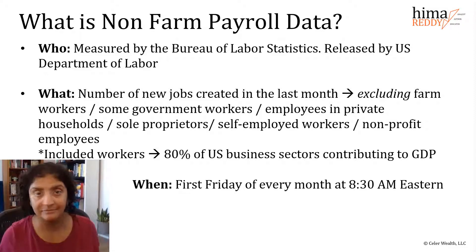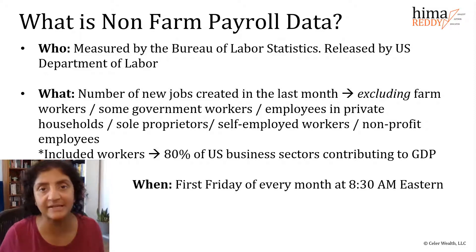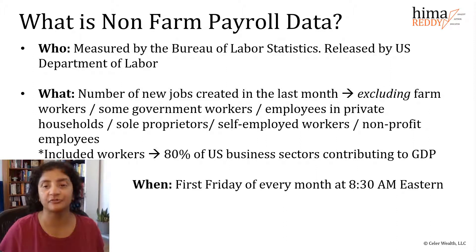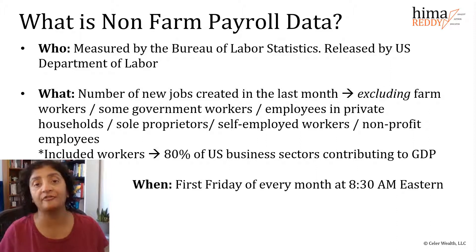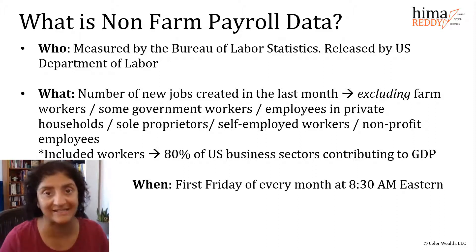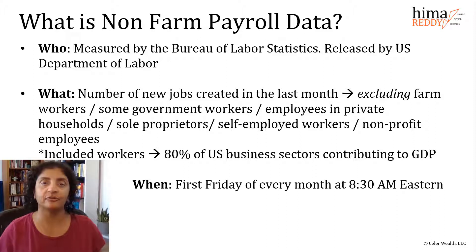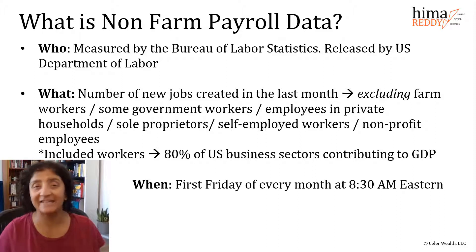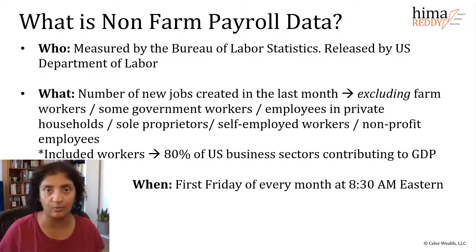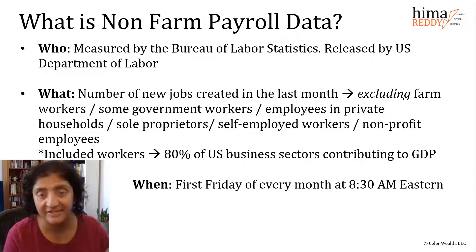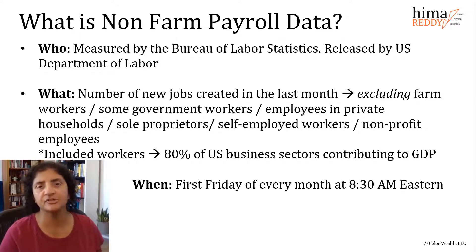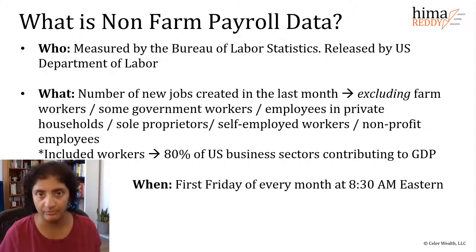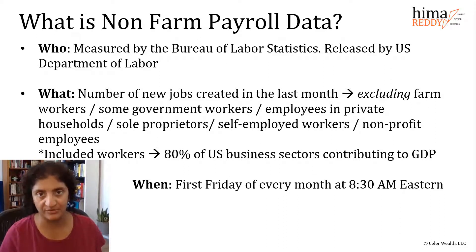Moving along — when? When is this important? When does this data come out? It is, like clockwork, the first Friday of every month. Depending on when the first of the month falls, this might actually be the second Friday technically — but it's the first Friday after a full week of the month generally, and you can find these dates at any time. It's not a mystery. This is pretty fixed, so you can plan and be ready for it in your trading. The time of the report is 8:30 a.m. Eastern — that's when this report is going to be released, no matter where you are in the world.